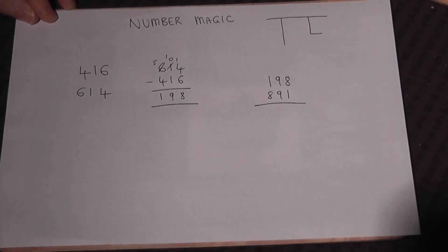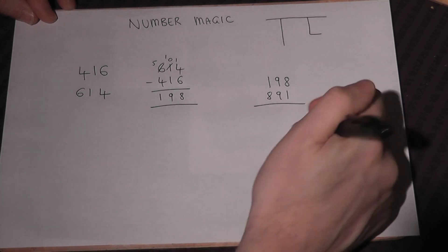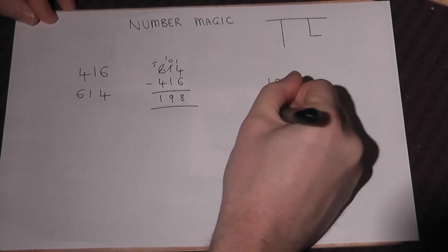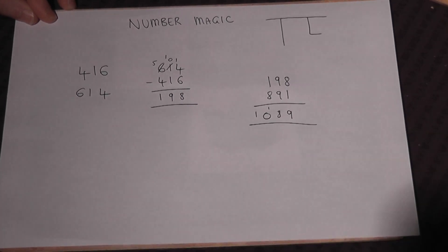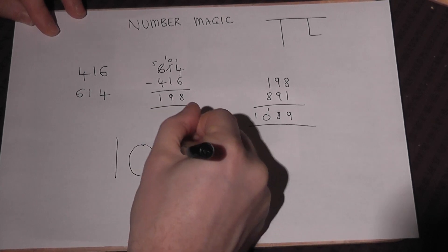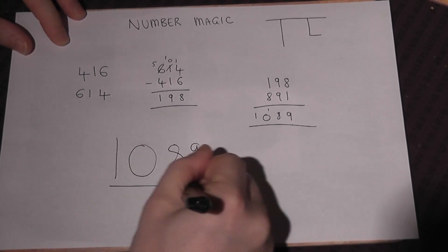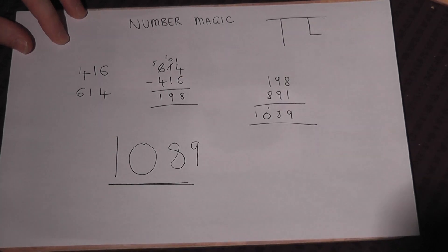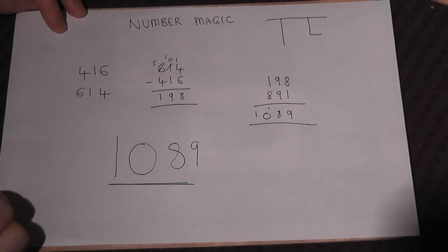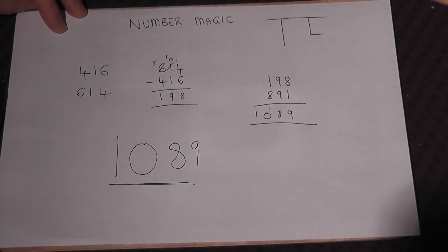The next thing to do is to add together those two numbers, and I promise you that this symbol here will force you to give you the answer of 1089. How does that work?